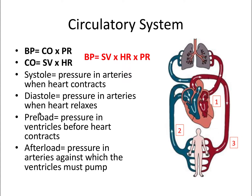Let's cover some important definitions. Systole refers to the pressure in the arteries when the heart contracts. Diastole is the pressure in the arteries when the heart relaxes. When you take a blood pressure — say 120 over 80 — that's systolic over diastolic pressure in the arteries. We also have preload, which is the pressure in the ventricles before the heart contracts, and afterload, which is the pressure in the arteries against which the ventricles must pump.